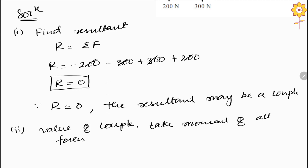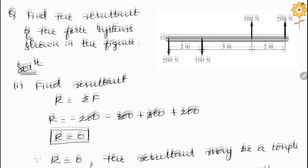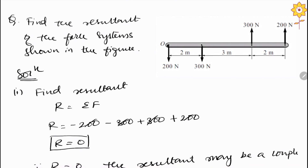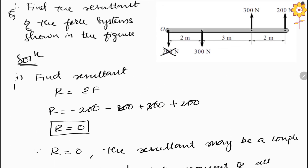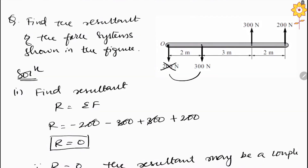At point O, we consider three forces — the force acting at point O itself is excluded because its distance is zero, giving no moment contribution. For the moment equation, summation of M_O: the first force of 300 N acting downward makes a clockwise direction about point O, so it is negative, and the distance is 2 meters.